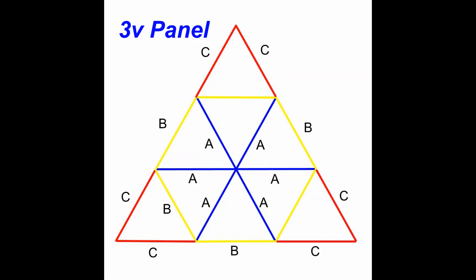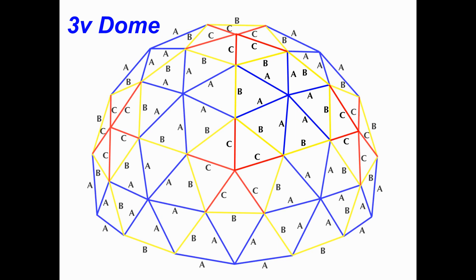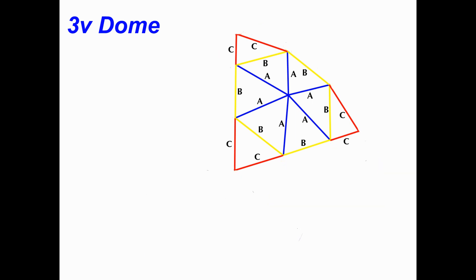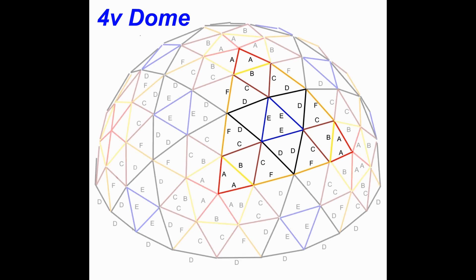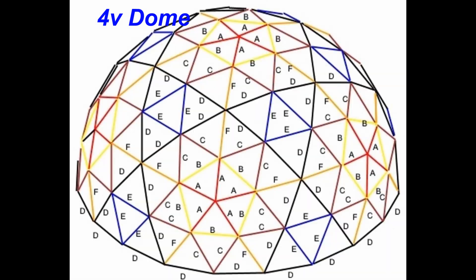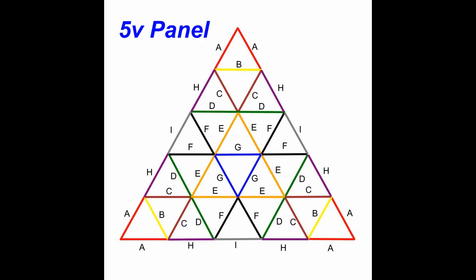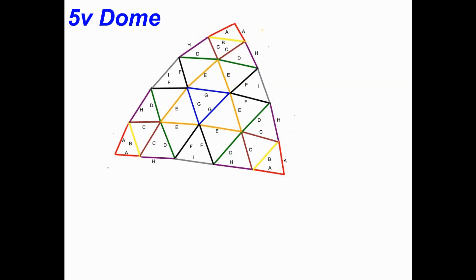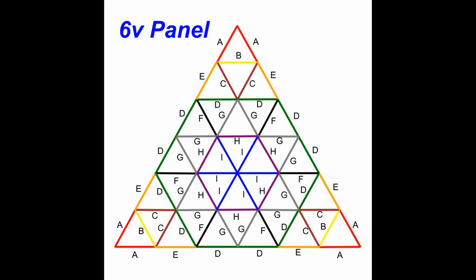When the face of an icosahedron is tessellated to the third frequency, an additional yellow strut is added. The shorter red and yellow struts on the outside of the triangle, with the longer blue struts on the inside, causes the curvature. A 4V dome has 6 different strut lengths, with longer blue struts in the center and shorter red and orange struts on the outer edges. The 5V and 6V domes each require 9 different strut lengths, with the longer struts in the center of each panel.